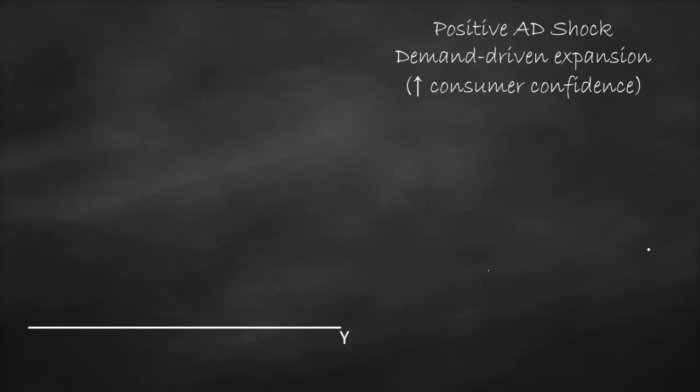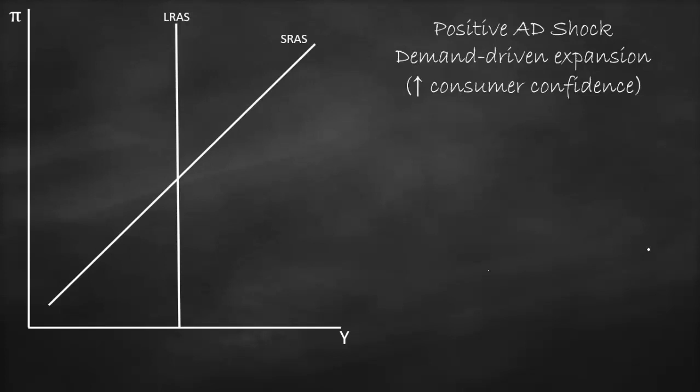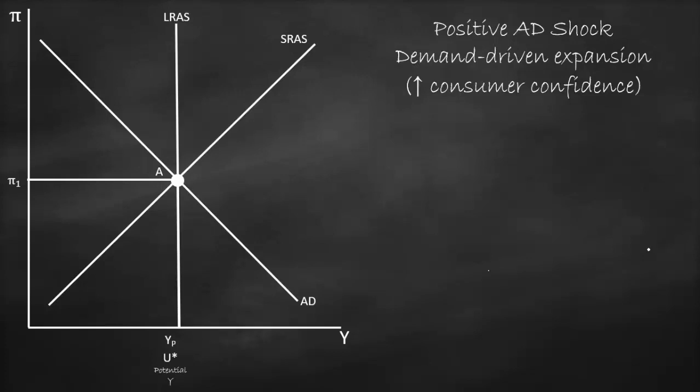Let's draw our aggregate demand and aggregate supply model. Our x-axis is real output and our y-axis is inflation. Our long-run aggregate supply curve is a vertical line. Our short-run aggregate supply curve is upward sloping, and our aggregate demand is downward sloping. All of them intersect at the same point, giving us an equilibrium at point A. This gives us our full employment output — our potential output at the natural rate of unemployment — and inflation level 1.